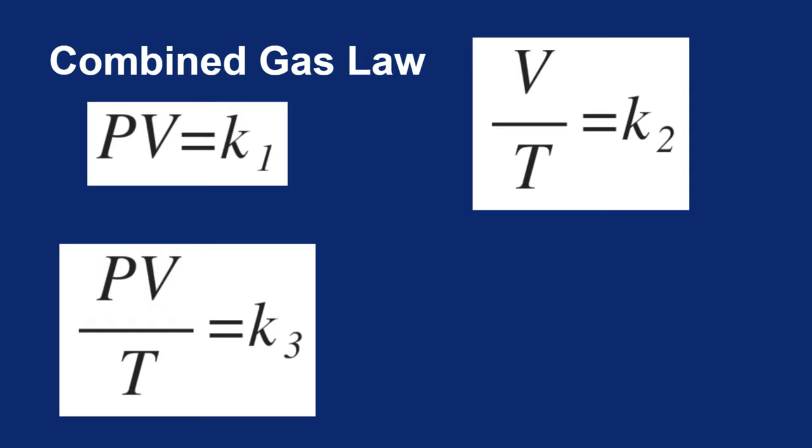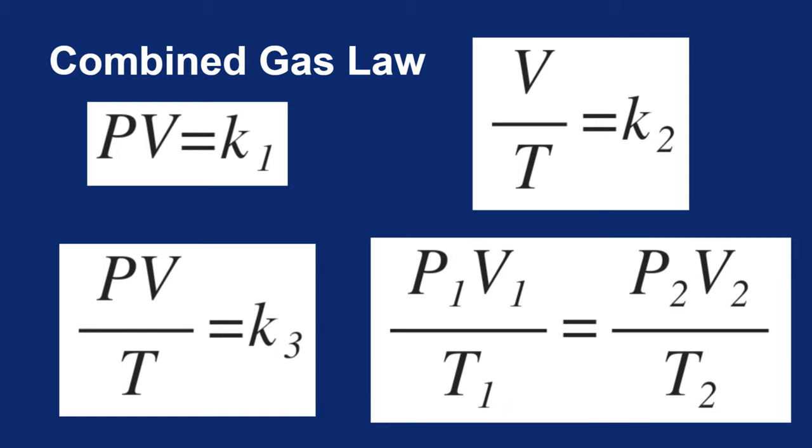And just as we did before, when you have the variables on one side and the constant on the other, you can rewrite the same expression to say P times V over T for the initial conditions will equal P times V over T for the final conditions, or P1 V1 over T1 equals P2 V2 over T2. This is probably the most useful form of the combined gas law.